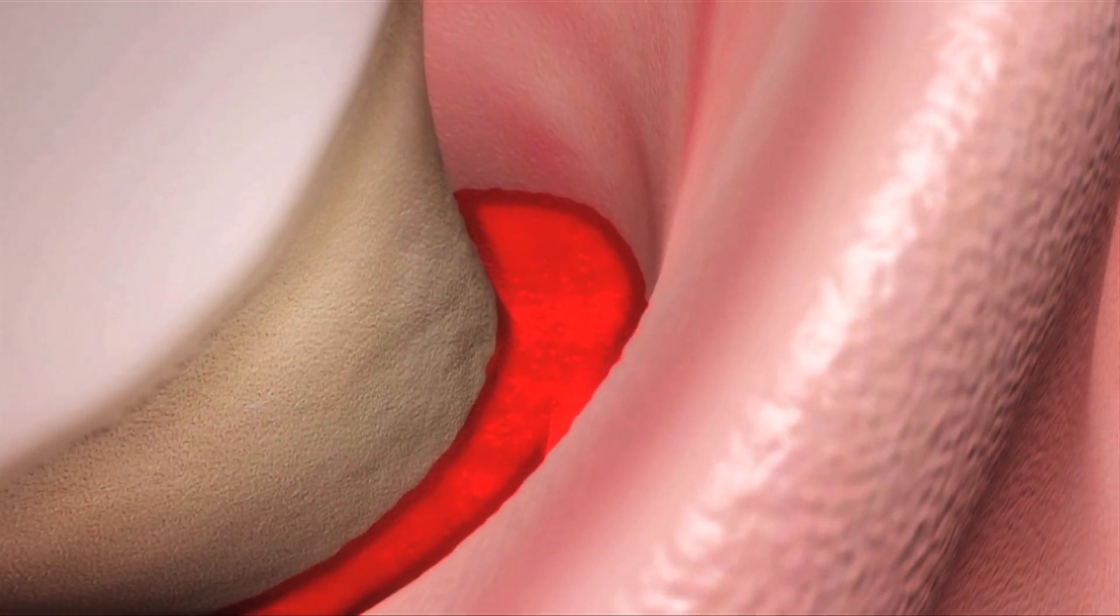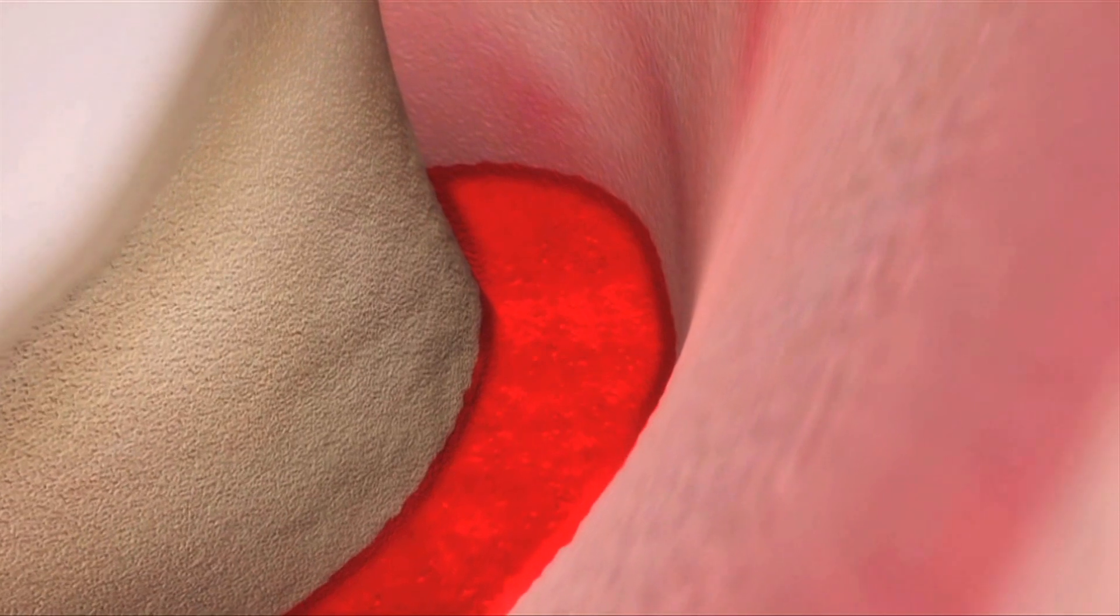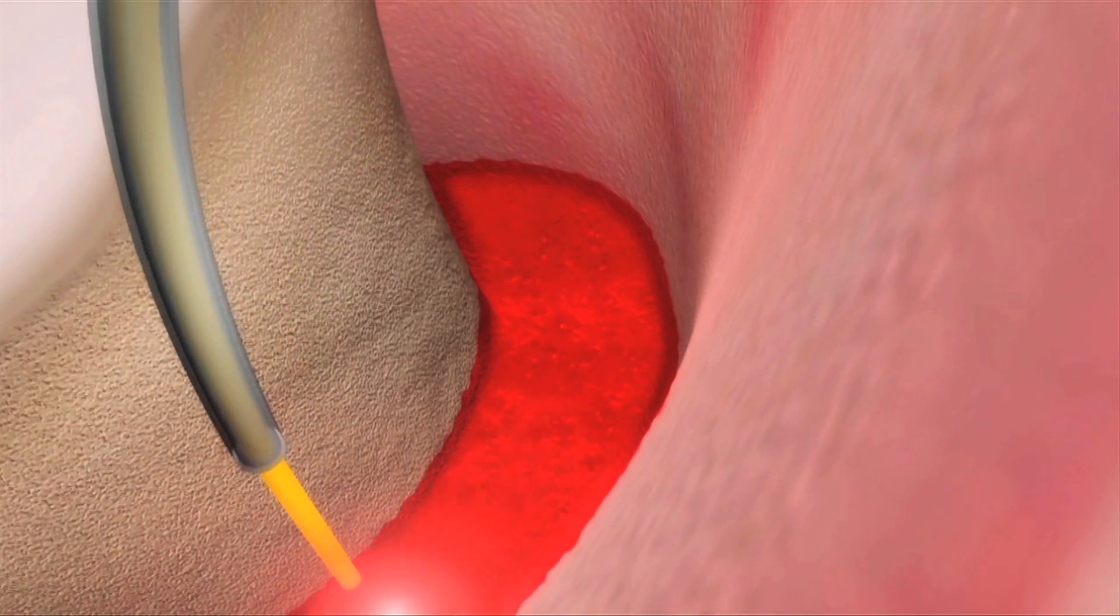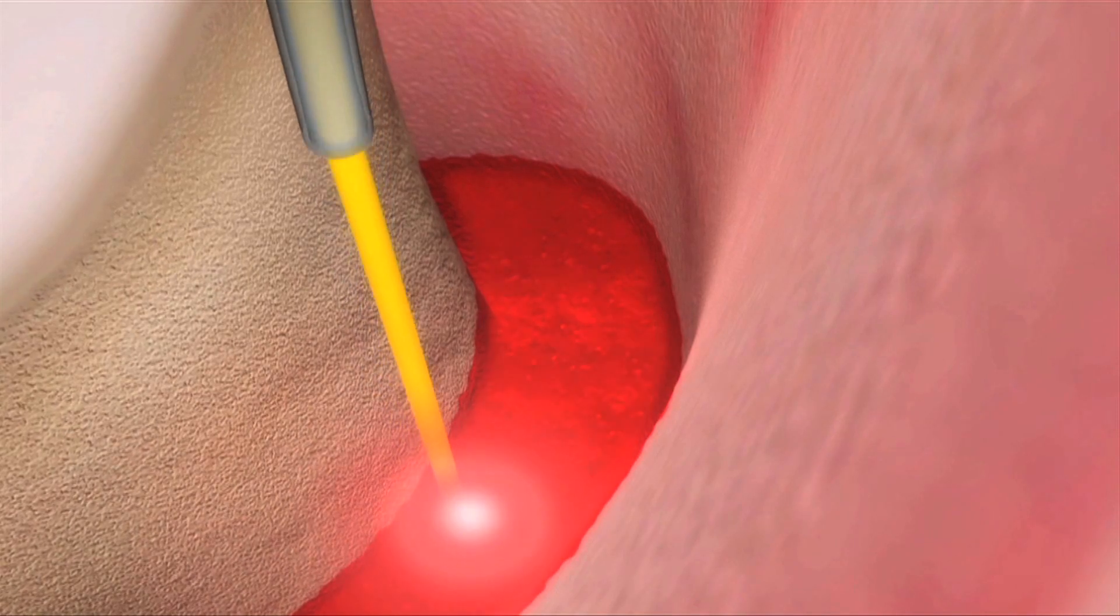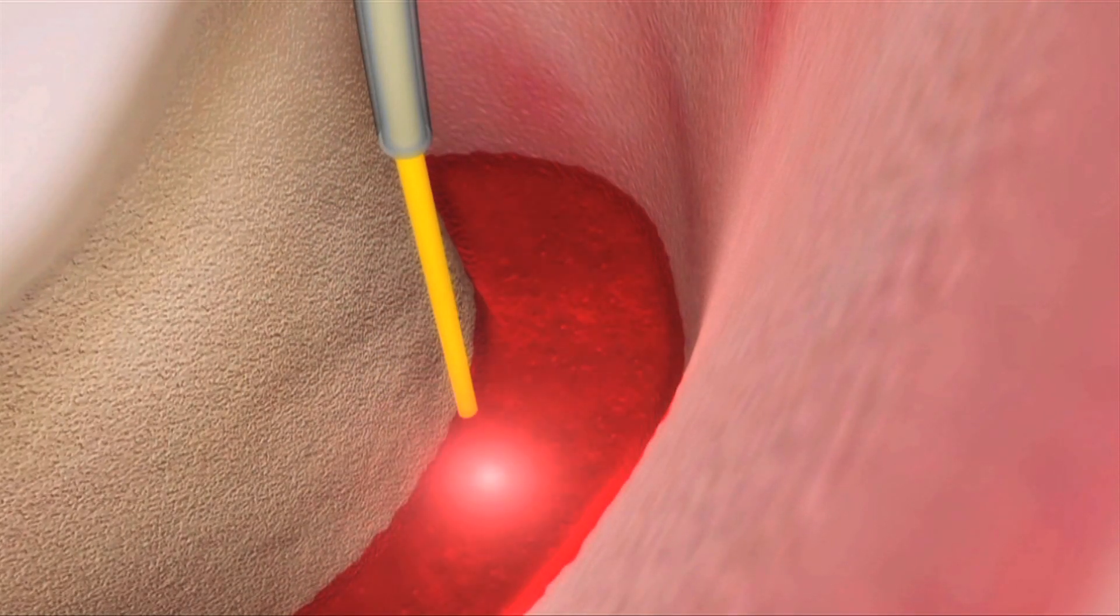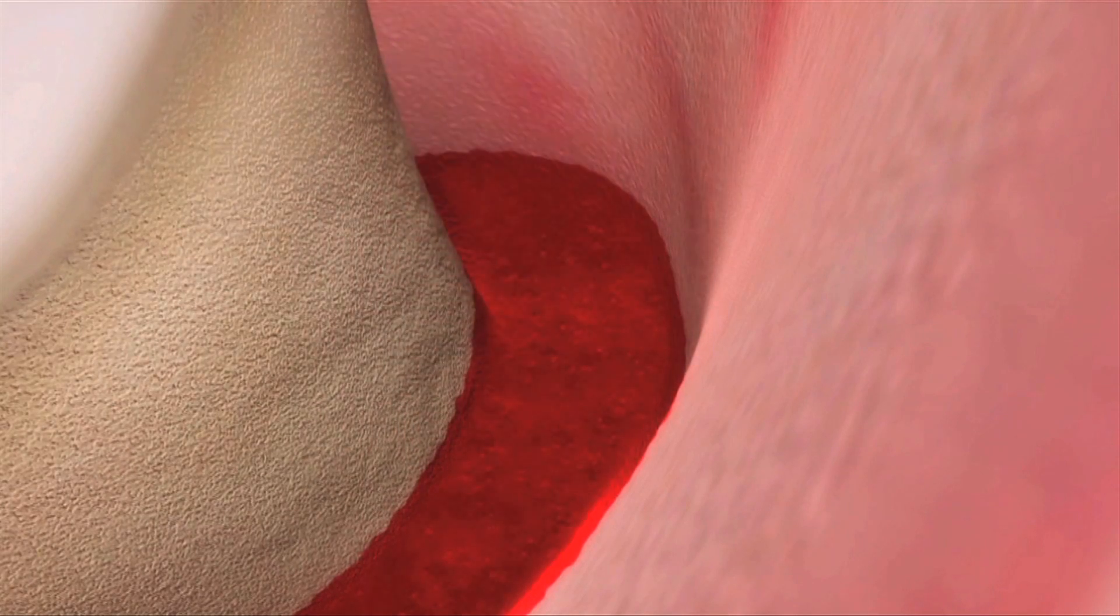Then, we again introduce ND YAG laser energy in the pocket to start development of the clot. We insert the tip all the way to the bottom of the pocket, then we fire the laser and draw out the tip until we see the blood start to get slightly darker.